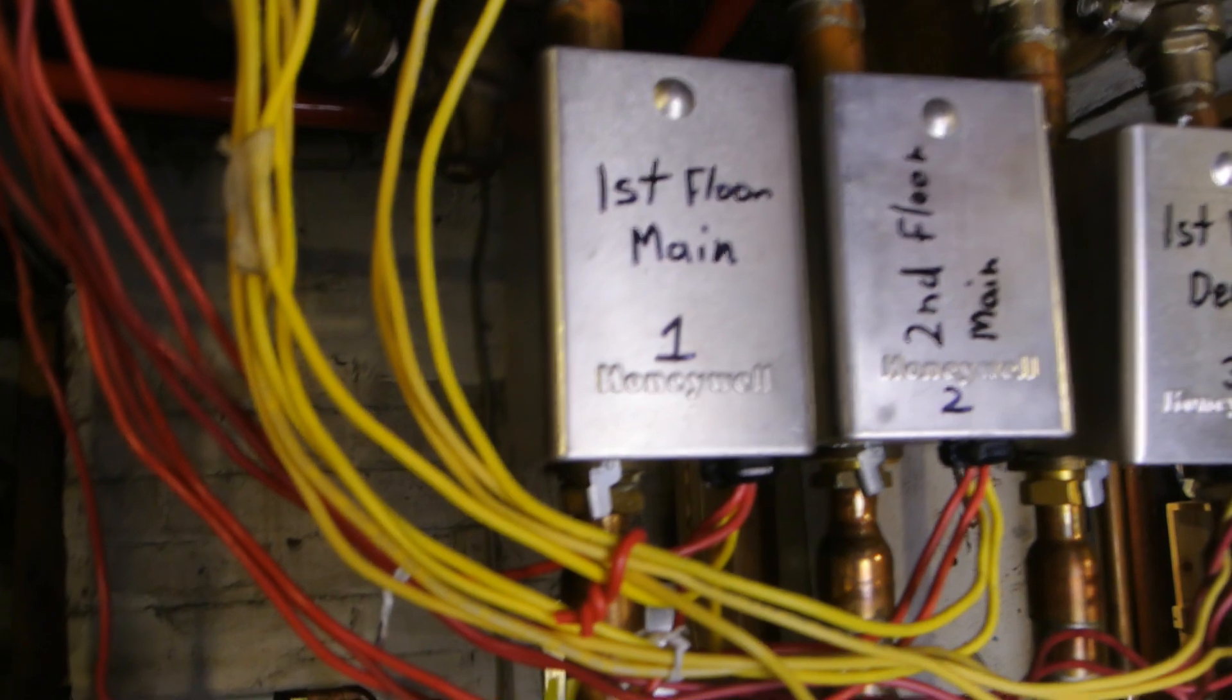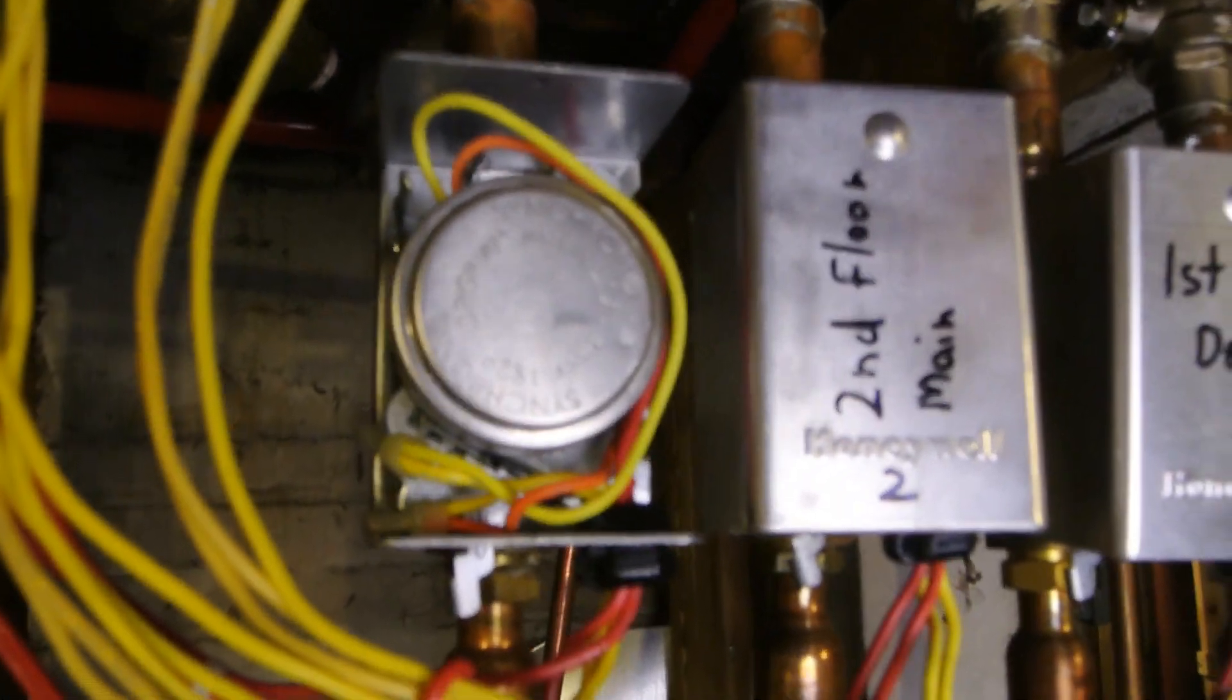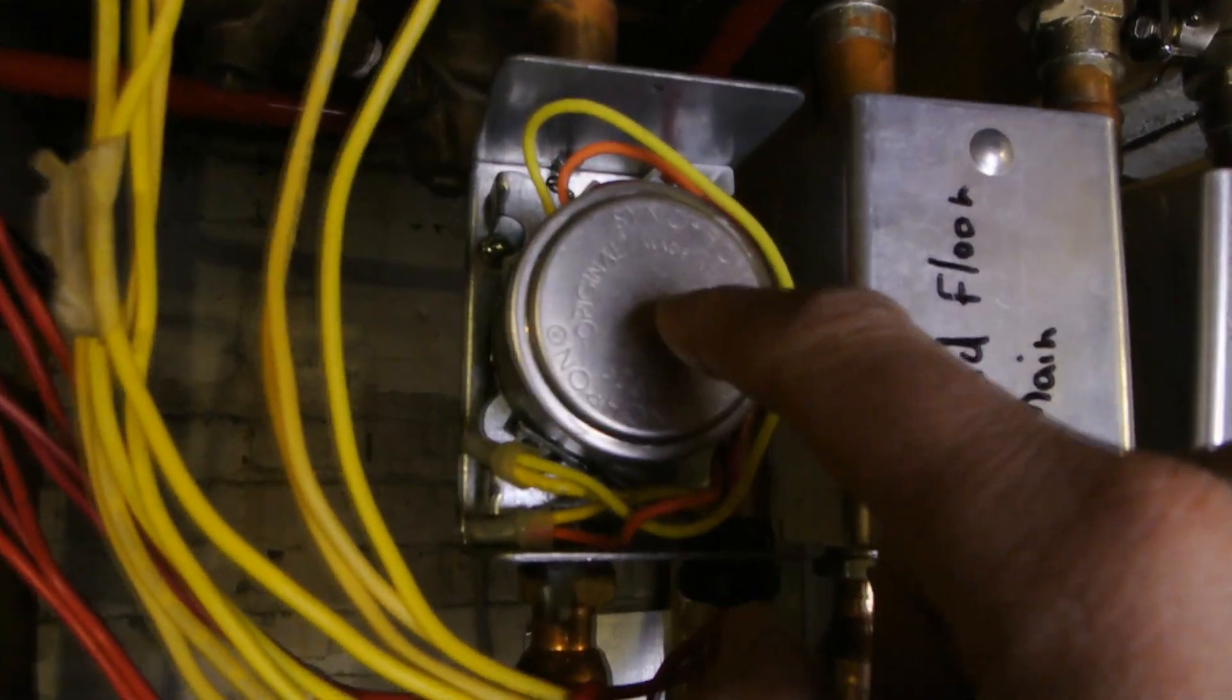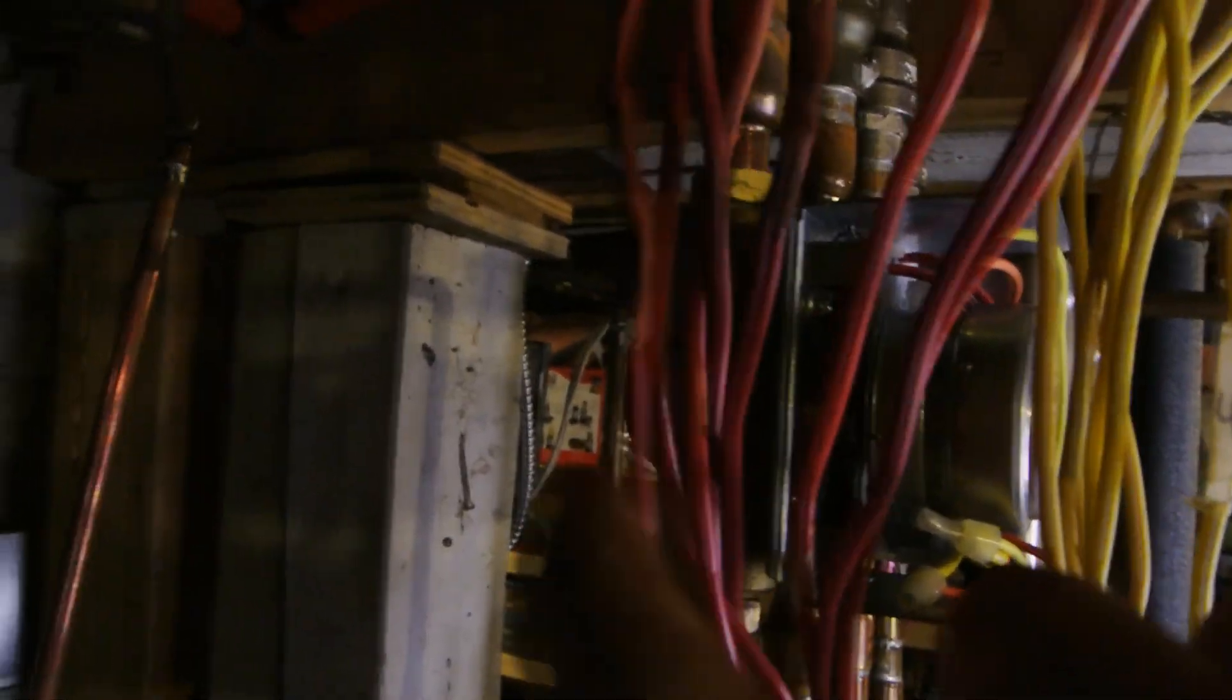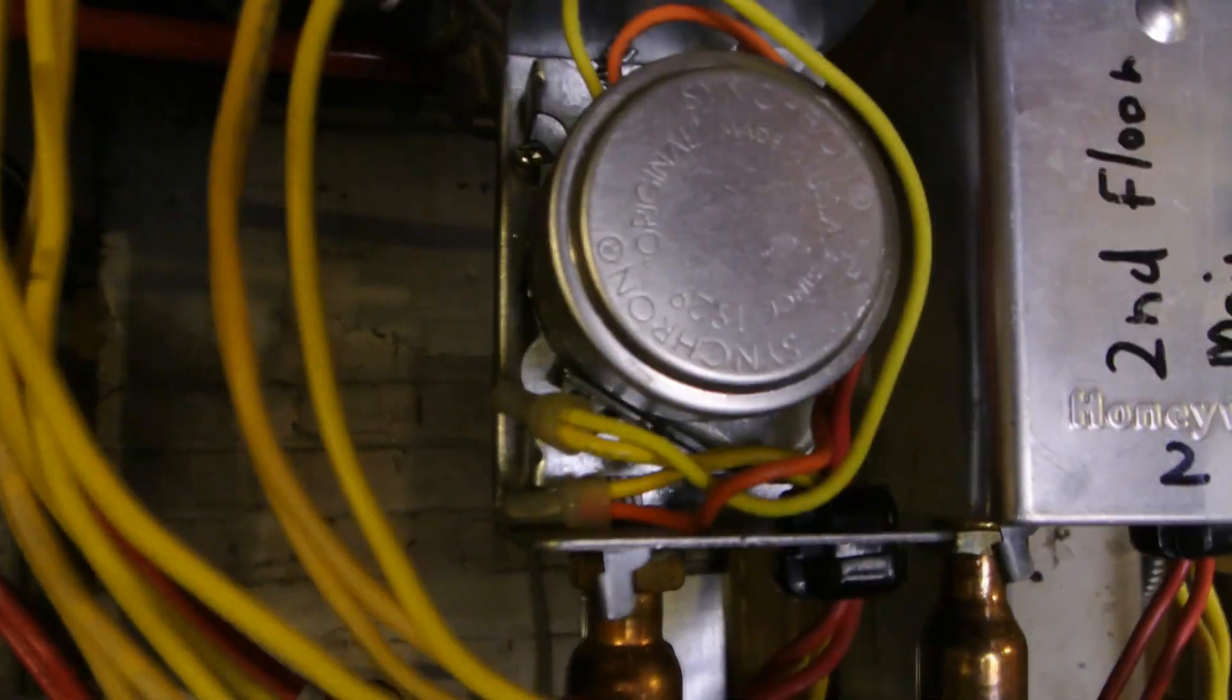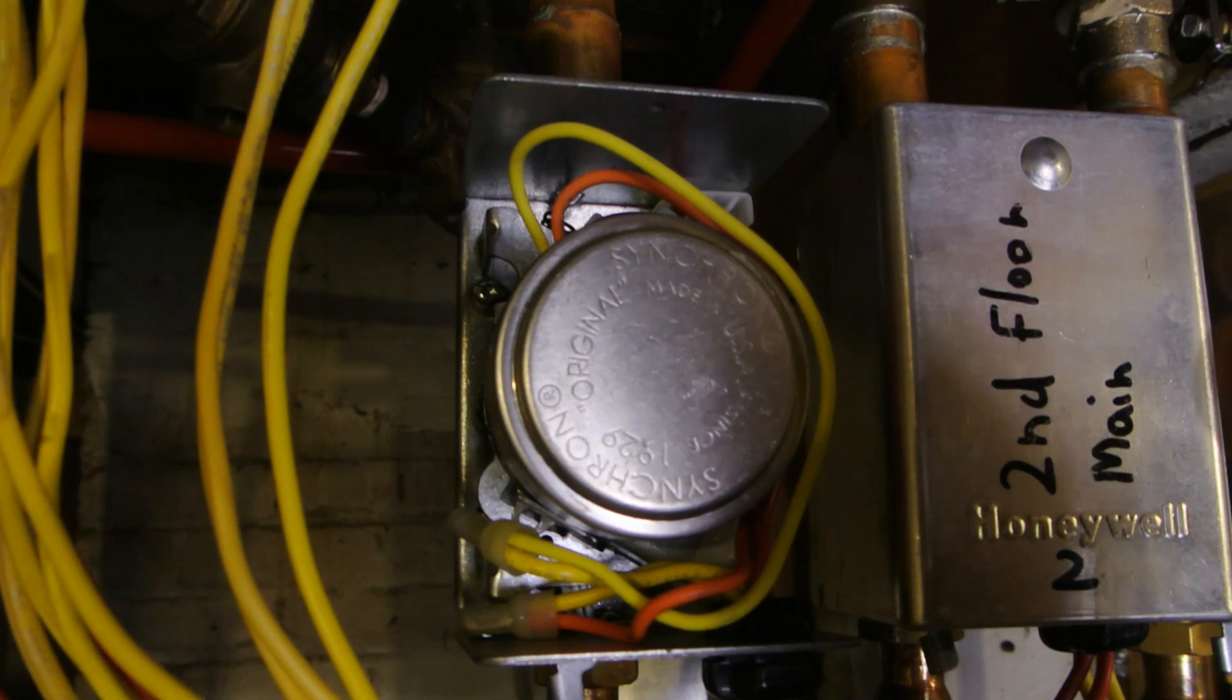It also tells the boiler to turn on, and I'm going to go over the components of how that works. I'm going to take the cover off of this zone valve. It's an electromechanical valve, meaning this is the electrical motor and there's a mechanical portion to it, which is the valve itself. What happens is when you turn on the thermostat, it completes the circuit, causing this motor to turn on and it holds the valve open.